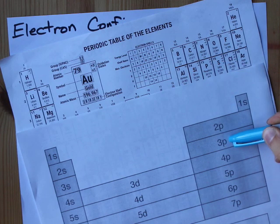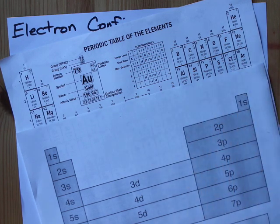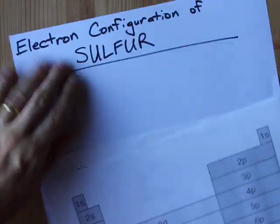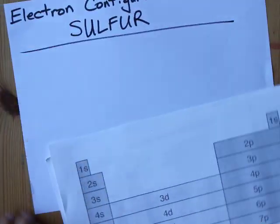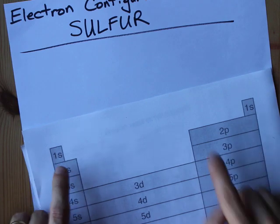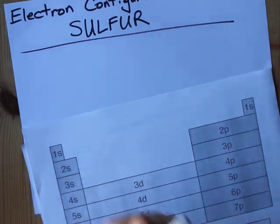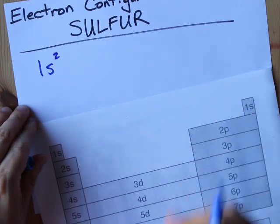Reminder, sulfur is here in the third row's P block, and it's the fourth element there. But to write out the electron configuration, you've got to do the whole thing, starting with 1S, and S's can hold two electrons.